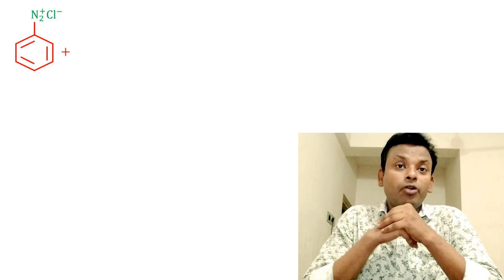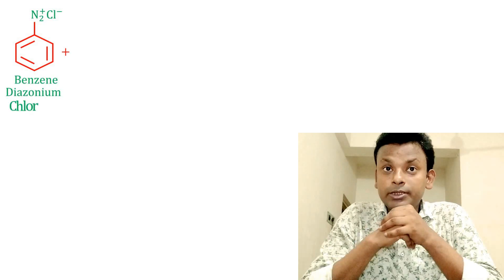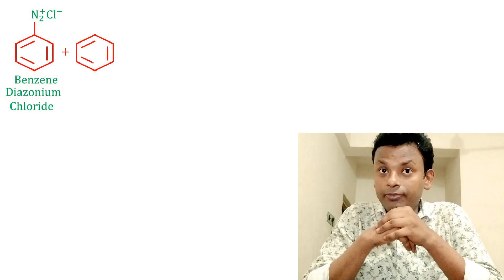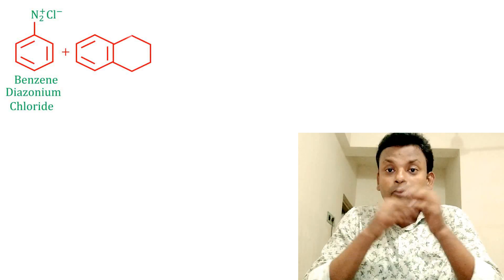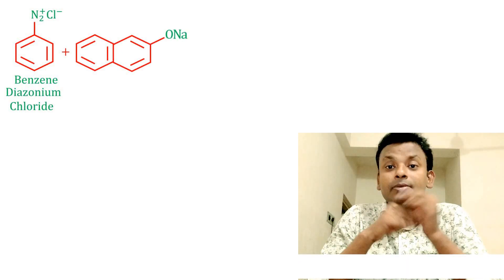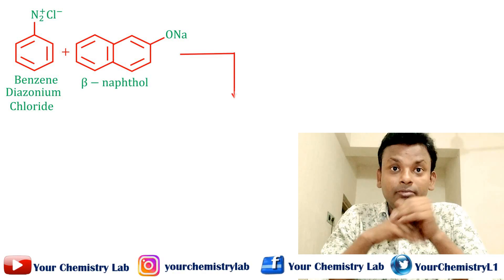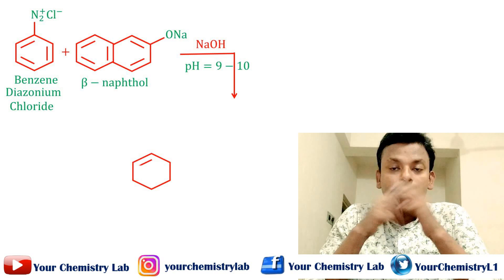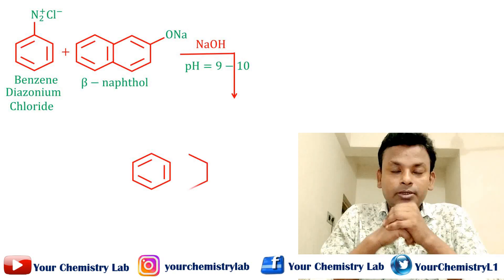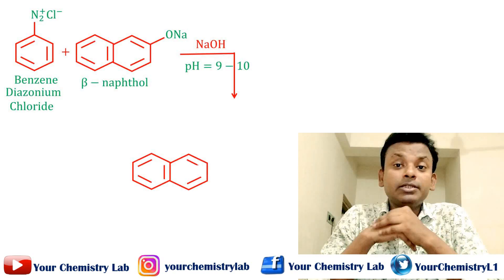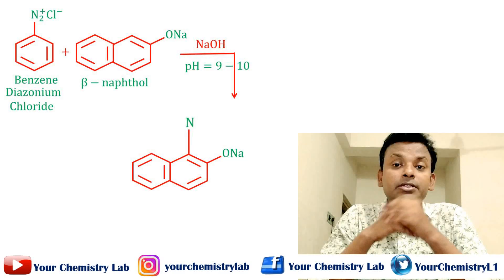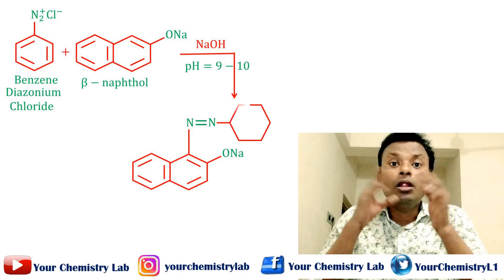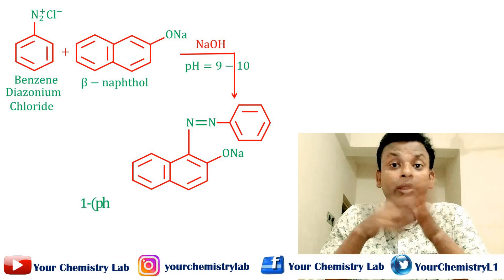Benzene diazonium chloride reacts with the sodium salt of beta-naphthol in alkaline medium (NaOH, pH 9 to 10) giving an azo compound at the 1-position. Its name is 1-phenylazo-2-naphthol, and it is brilliant red in color.